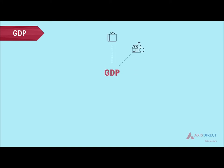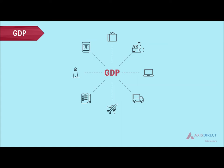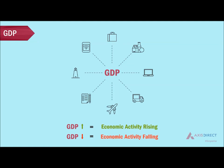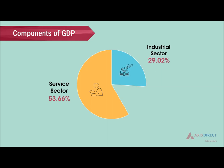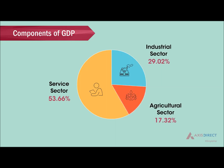GDP is the value of all the final goods and services produced in the country in a financial year. When GDP rises, it signifies growing economic activity. When GDP falls, it signifies falling economic activity. The main components of GDP are the service sector, industrial sector, and agricultural sector. An increase in the output of any of these components would mean an increase in GDP.